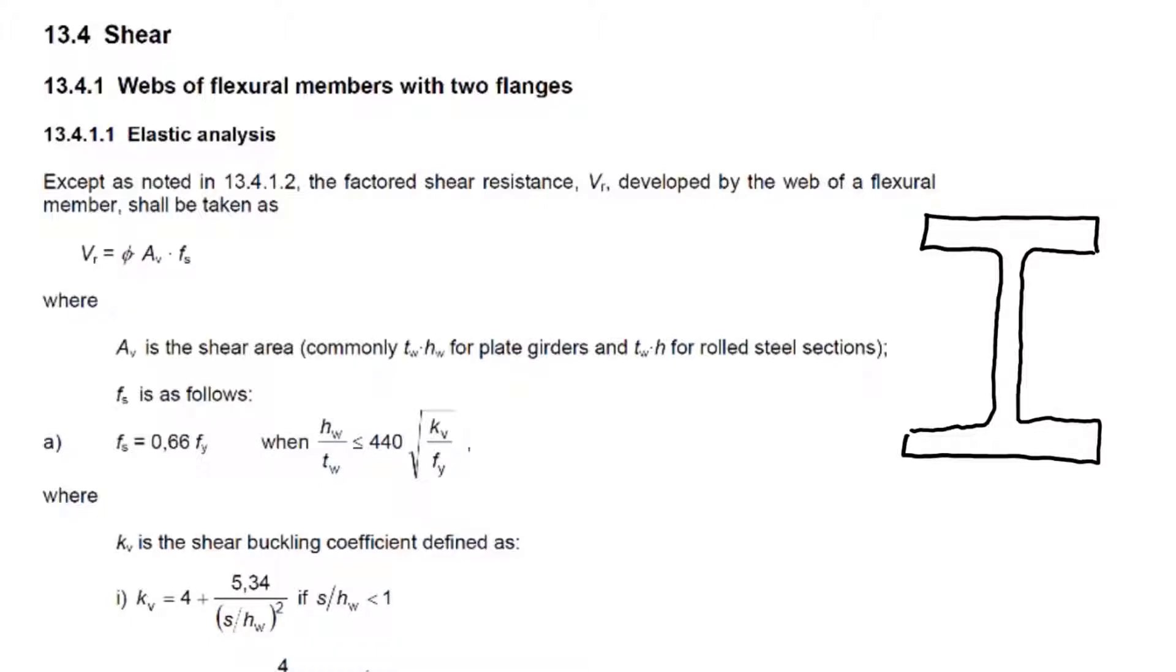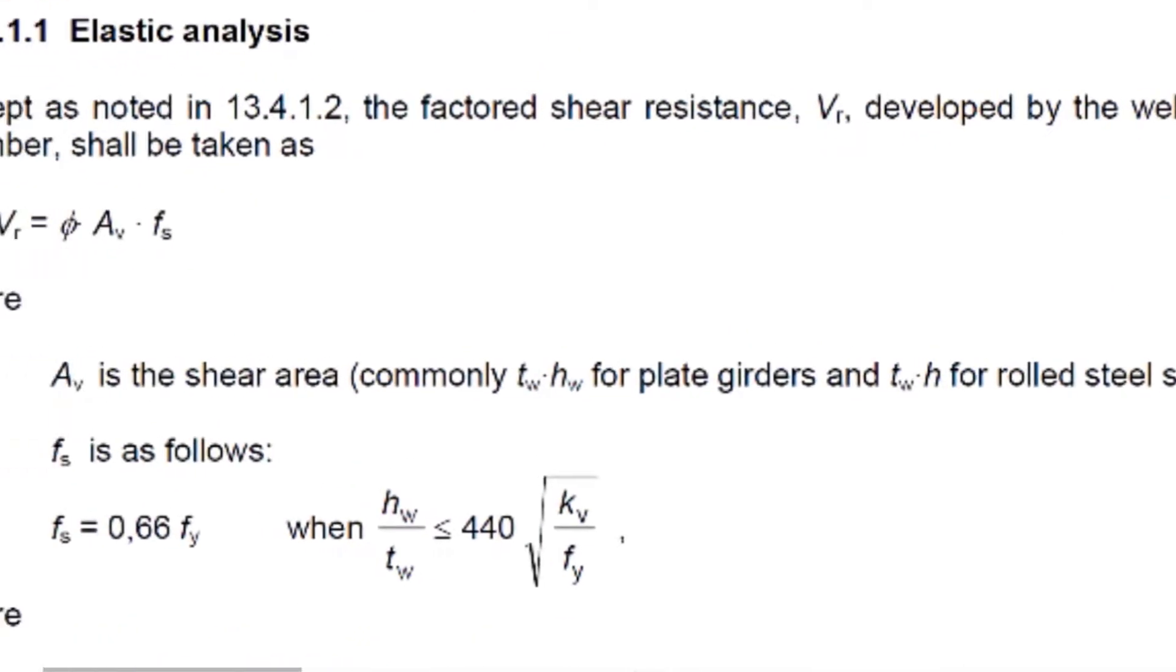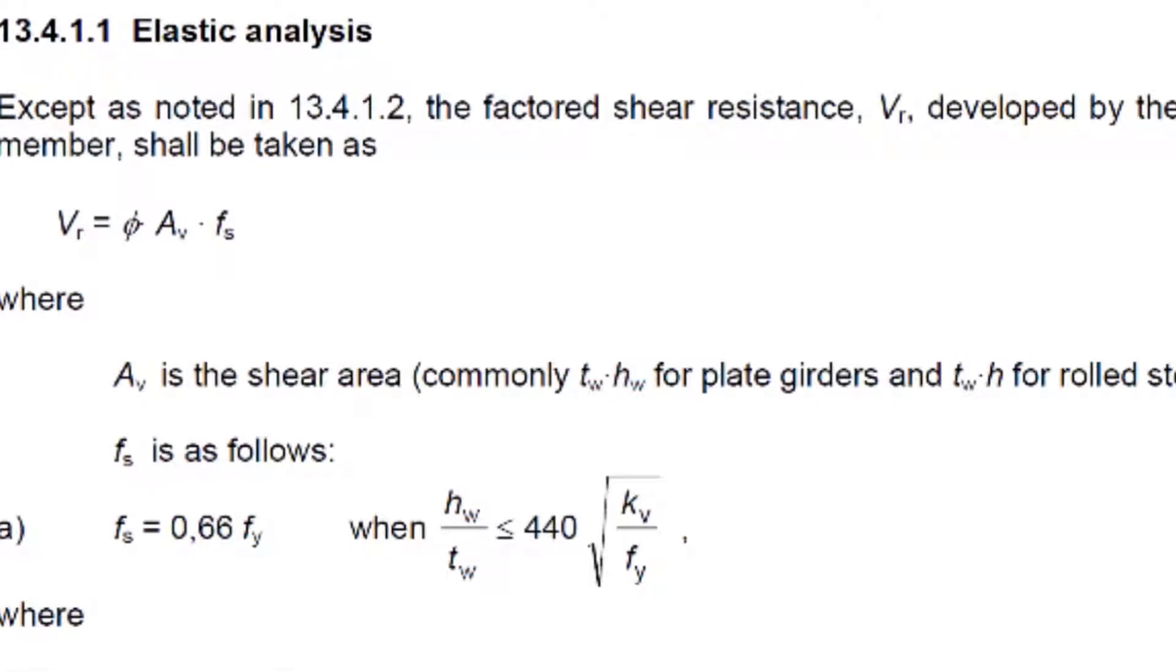We're now going to cover the design of shear according to SANS 10162 part 1, looking at shear design of steel members. The main thing is that shear is relatively straightforward. Most shear members you can design with a simple one-line calculation as shown here. The shear resistance is a partial factor 0.9 times an area of shear times a shear stress that we allow.